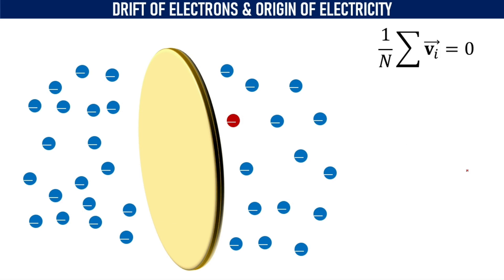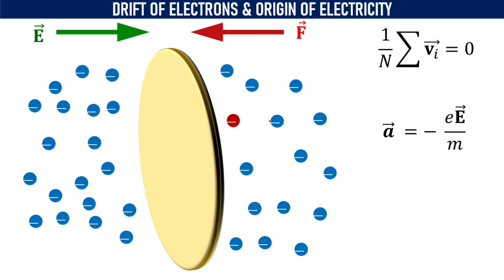With the presence of the external electric field, the free electrons will experience a force in a direction opposite to that of the electric field. Because of this force, there will be acceleration in each of the free electrons. We know that acceleration is represented as force divided by mass of the object. Here m represents the mass of the electron and force is the electrostatic force, which is equal to the charge of the electron multiplied by the electric field. The negative symbol indicates that the acceleration is in a direction opposite to that of the electric field.